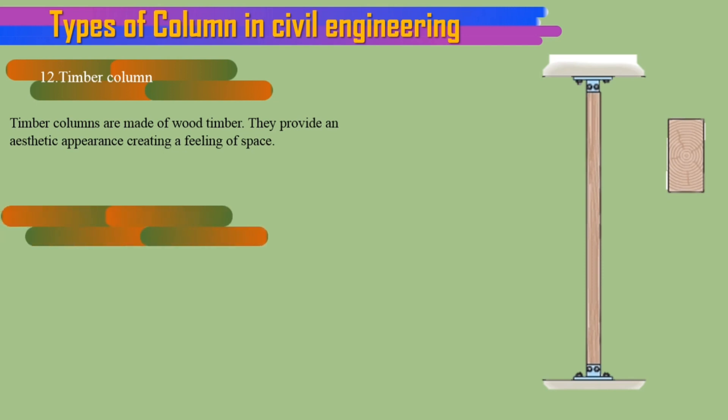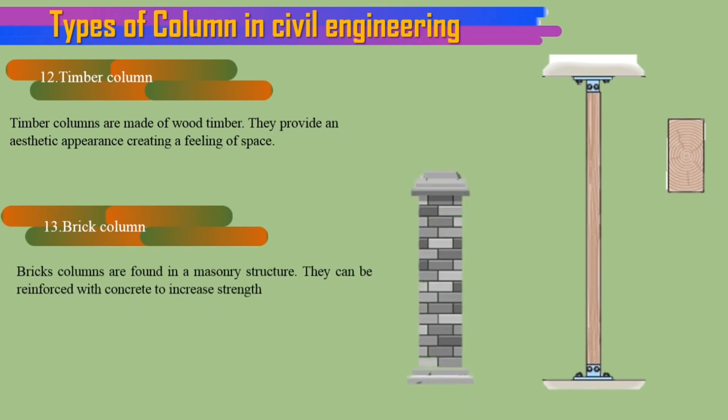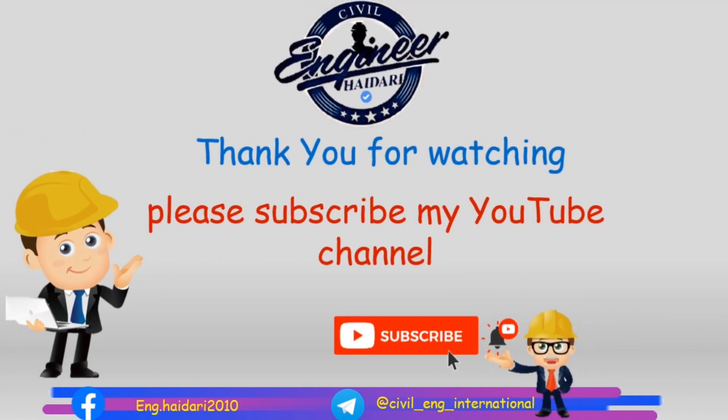13. Brick column. Brick columns are found in a masonry structure. They can be reinforced with concrete to increase strength.